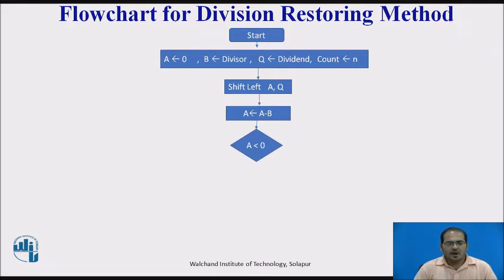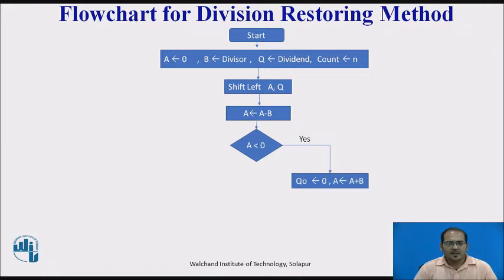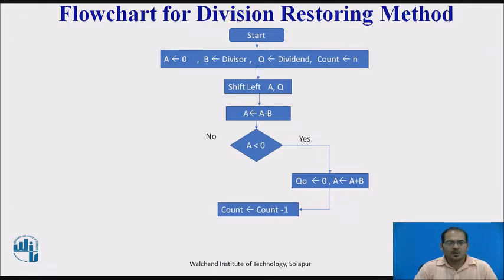After performing the A minus B operation, if the content of A is less than 0 — that is, a negative value — then set Q0 in the Q register to 0, perform the A plus B restore operation, and decrement the count. If A is not less than 0, then set Q0 to 1 and decrement the count.